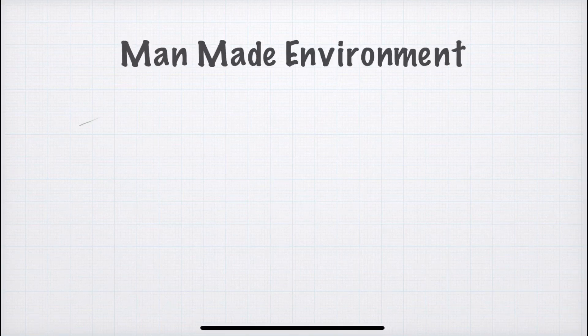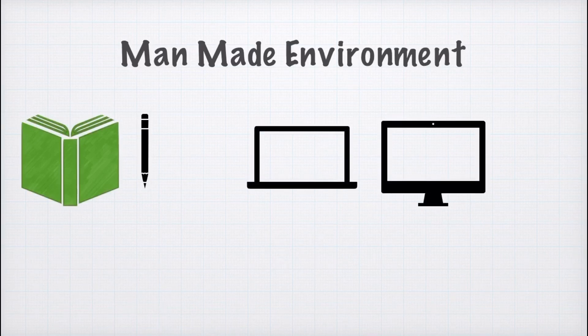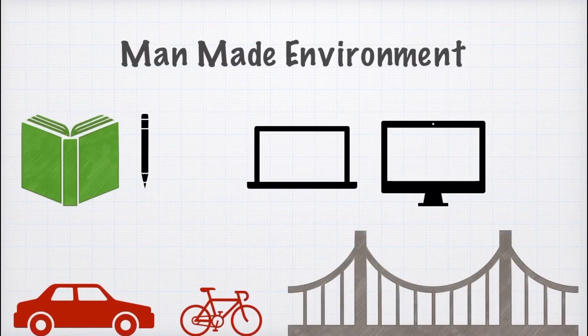Since we have discussed natural environment, what is the other type? The other type is manmade environment. Manmade environment consists of elements made by people — these elements do not occur naturally. For example, man created notebooks, cars, bicycles, computers, laptops, and bridges. These things do not occur naturally in the environment.